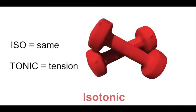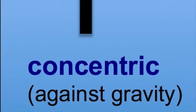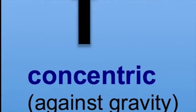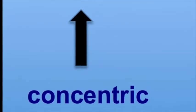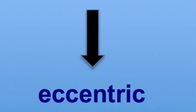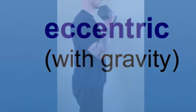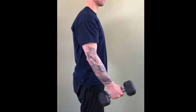For isotonic, iso means same and tonic means tension. For example, if you're lifting a 5-pound dumbbell, it's the same 5-pound dumbbell the entire time you're lifting it. The concentric phase is the up phase of an isotonic movement — the muscle shortens and the movement is usually against gravity, as in the up phase of a bicep curl. The eccentric phase is the down phase — the muscle lengthens and the movement is usually with gravity, as in the down phase of a bicep curl.